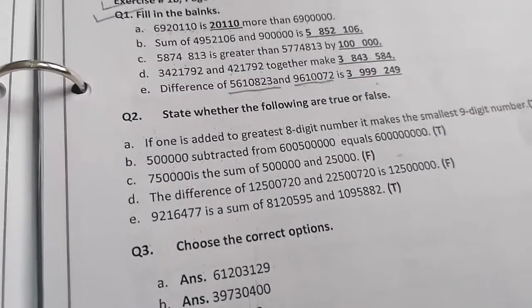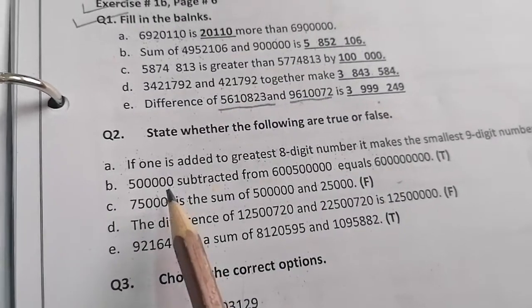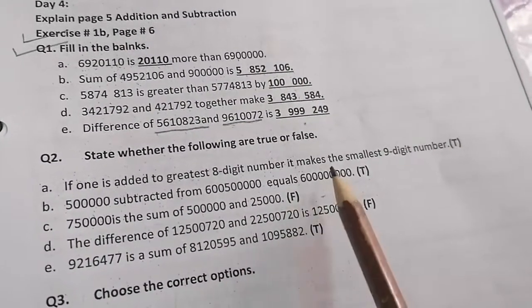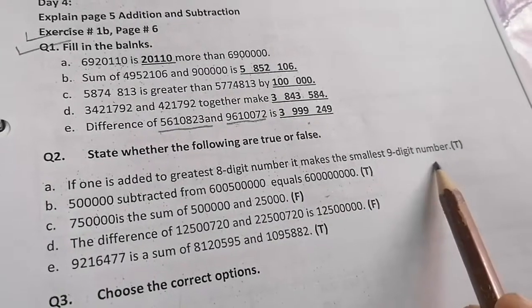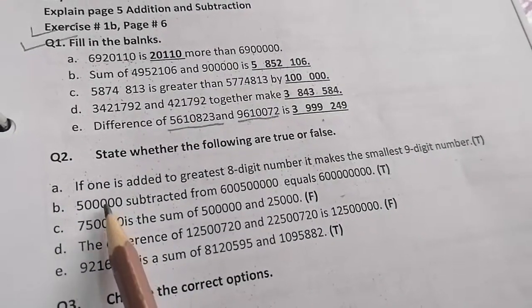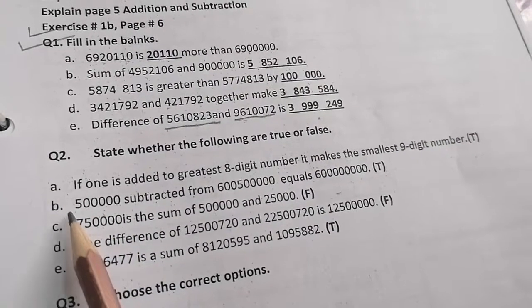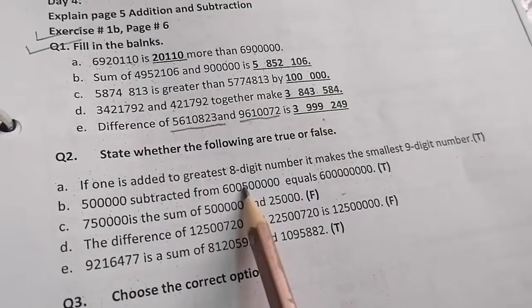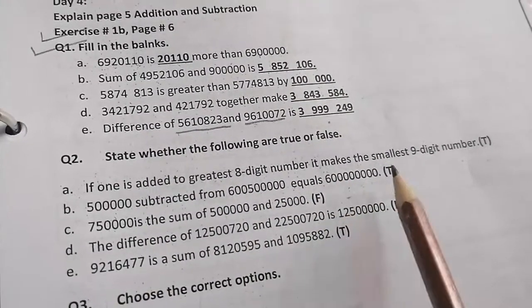State whether the following are true or false. If 1 is added to the greatest 8 digit number, it makes the smallest 9 digit number. Yes, true. 500000 subtracted from 600,000 equals 25000. Yes, it's true.